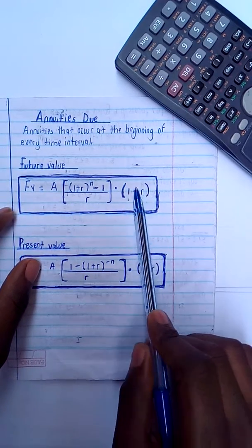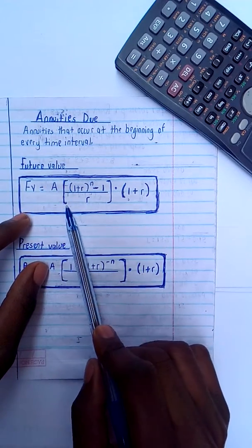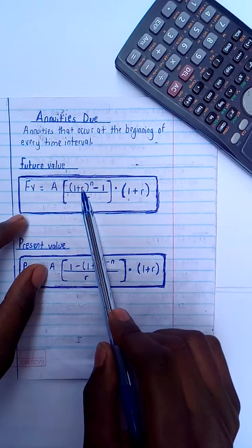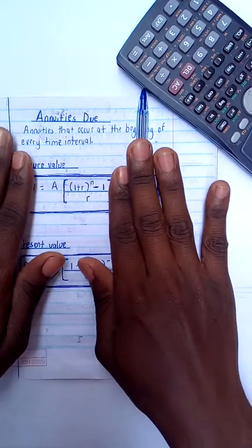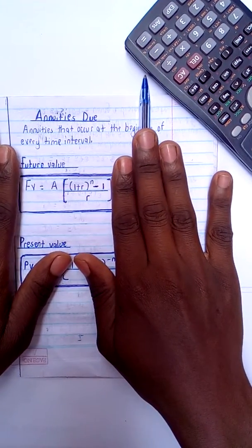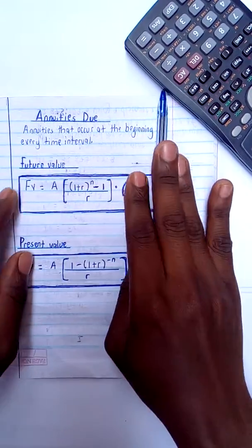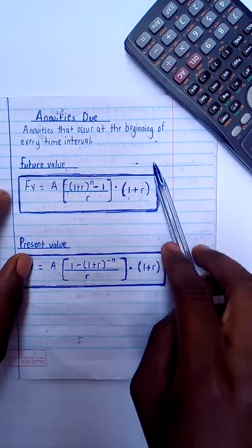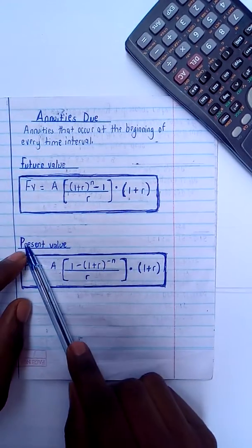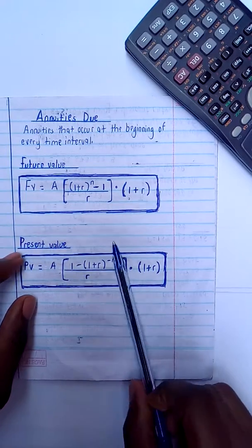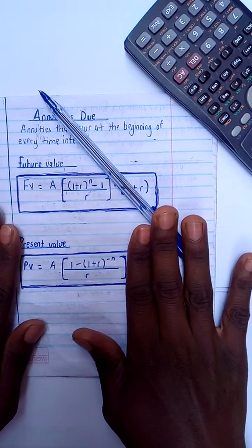It is like for an ordinary annuity and then I times it with the bracket one plus r. So it will be: future value equals the annuity times square brackets, bracket one plus r bracket to the power n minus one divided by r. If I told you how to cover this, this will be the future value of an ordinary annuity. But if I had to add this, then it becomes the complete formula for the annuities due. Same to the present value of annuities due.